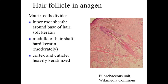During the anagen phase, matrix cells are dividing — continuous with the epidermal lining — and pushing cells up into the hair shaft. As those cells are pushed up, they differentiate similarly to cells in the epidermis, becoming either softly keratinized or heavily keratinized with a hard form of keratin. Cells at the center form the medulla; those on the outside are maximally keratinized with very hard keratin forming the cortex and cuticle — that outer rigid shaft around the hair.